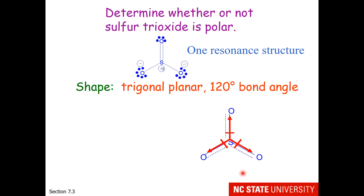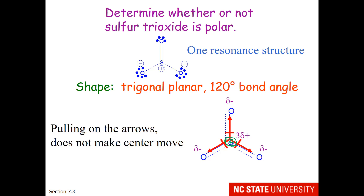Thinking in terms of charges: each oxygen is partially negative and the sulfur is partially positive. The center of positive charge is on the sulfur. The center of negative charge is also on the sulfur. So if positive charge and negative charge are located at the same place, we have a non-polar molecule. Either way you look at it — pulling on the arrows does not make the center move, and the centers of positive and negative charge coincide — therefore a non-polar molecule.